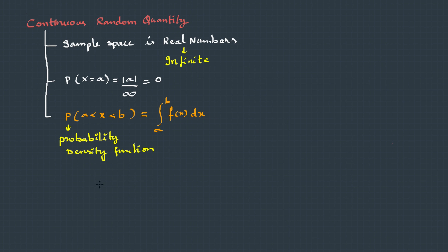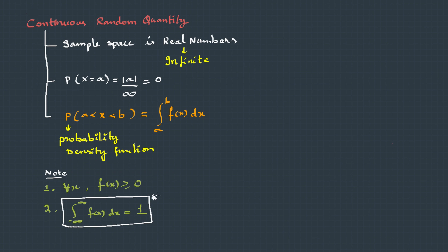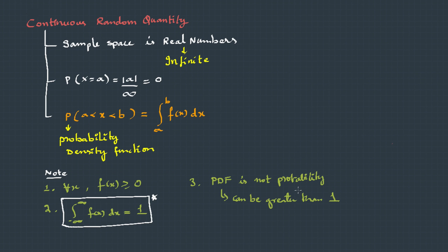There are a few things to note for the PDF. First, for all random values, we assume that f(x) is always greater than 0 — that means it should never go to negative values. Second, when we integrate f(x) from negative infinity to positive infinity, it has to become 1. This is a very important rule which we will be using in many numerical questions. Third, this PDF is not a probability, because integrating it over a set of values can sometimes give more than 1, which violates the laws of probability. So though we call it a probability density function, it is not a discrete probability.